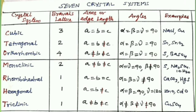Examples of crystal systems: cubic — sodium chloride, zinc blende, copper; tetragonal — white tin, tin dioxide, titanium dioxide, calcium sulfate; orthorhombic — orthorhombic sulfur, potassium nitrate, barium sulfate; monoclinic — monoclinic sulfur, sodium sulfate 10H₂O; rhombohedral — calcite (calcium carbonate), cinnabar (mercury sulfide); hexagonal — graphite, zinc oxide, cadmium sulfate; triclinic — copper sulfate. This concludes the information about solid state chemistry.